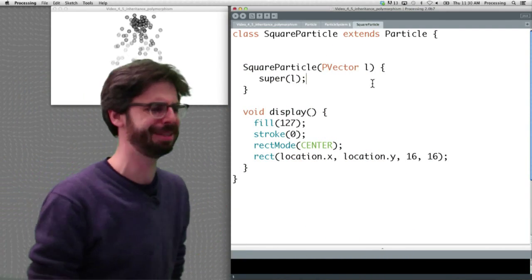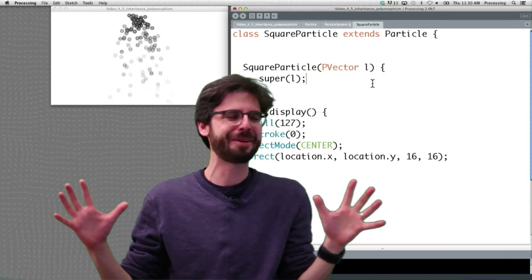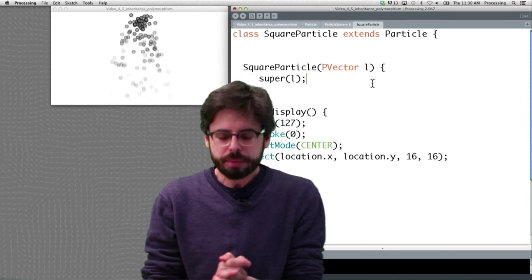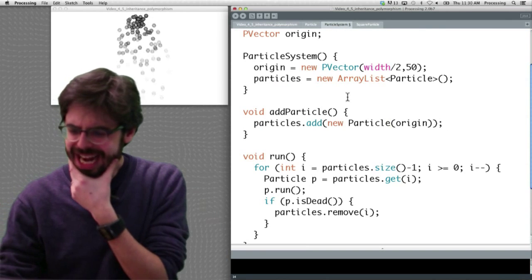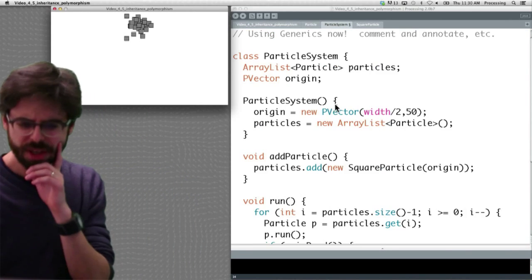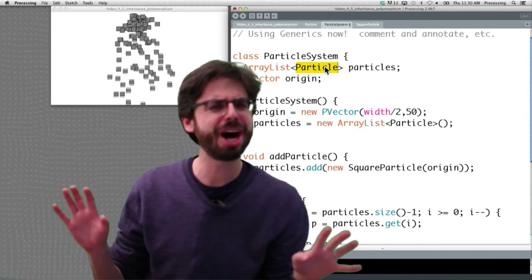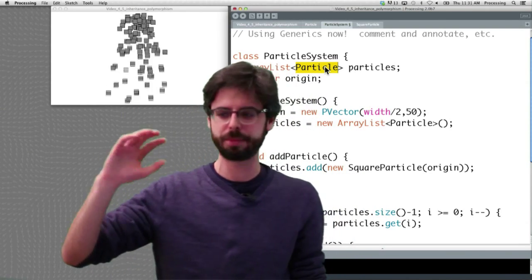Now, a funny thing has happened that you might, I'm shocked that this is only five minutes into this video. But a funny thing has happened here. Notice that I change this to square particle, and it runs, but my ArrayList still just has particles in it. So this is something we haven't covered yet, and it's called polymorphism, and it's what the next video is going to be about.